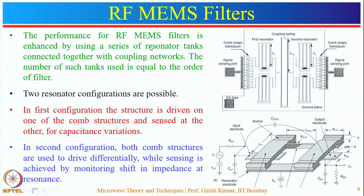The next component based on RF-MEMS topology is the filter. In case of a filter, it is desired to have a flat band-pass response, high out-of-band rejection ratio, and high roll-off factor. The performance of the RF-MEMS filter is enhanced by using a series of resonator tanks connected together with a coupling network. The number of resonator tanks decides the order of the filter — more resonator tanks means higher order and better selectivity. One common configuration is the parallel plate capacitor of comb structure type.